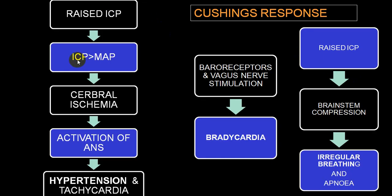When ICP exceeds mean arterial pressure, cerebral ischemia activates the autonomic nervous system, causing tachycardia and increased cardiac output. Hypertension ensues, systolic pressure is elevated, and baroreceptor/vagus nerve stimulation produces bradycardia — this is the Cushing response. The Cushing triad consists of systolic pressure elevation, wide pulse pressure, bradypnea, and bradycardia. In contrast, in shock, the patient will have tachycardia, tachypnea, and fall of both systolic and diastolic blood pressure.